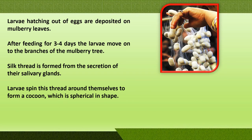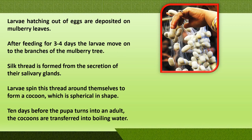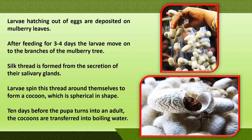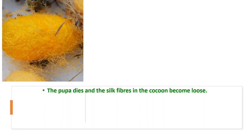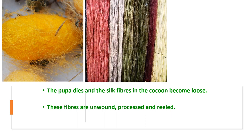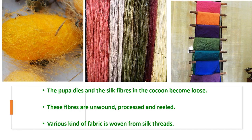Ten days before the pupa hatches into an adult moth, the cocoons are collected and transferred into boiling water, which kills the pupa but loosens the silk fibers in the cocoon. These fibers are unwound, processed, and put on reels in various colors. Various kinds of fabric are then woven from the silk thread, producing beautiful silk cloth.